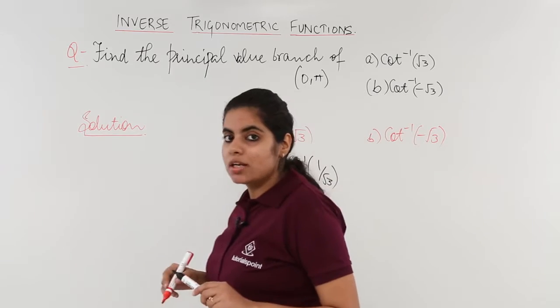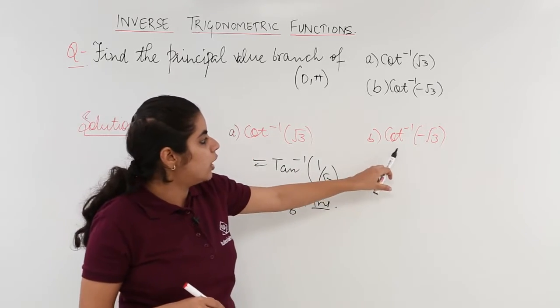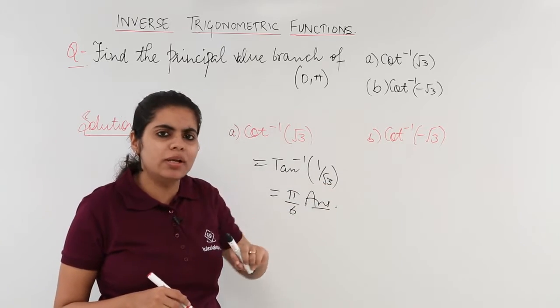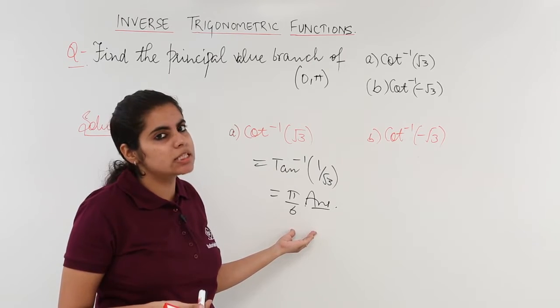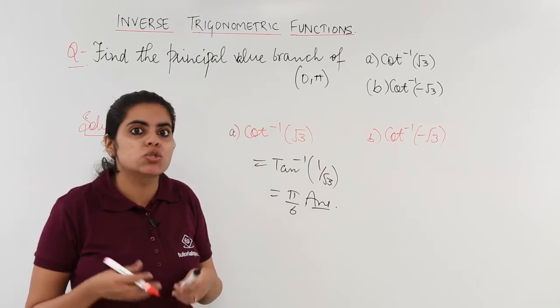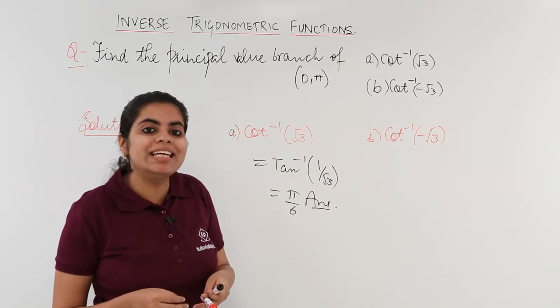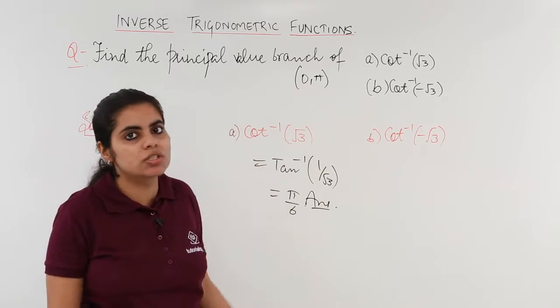When is the value of cot negative? This has to be considered. So cot inverse minus under root 3 would have been same as minus π by 6. But does minus π by 6 lie in the range 0 to π? No. So what to do? We need to include the value which only lies in this range 0 to π.